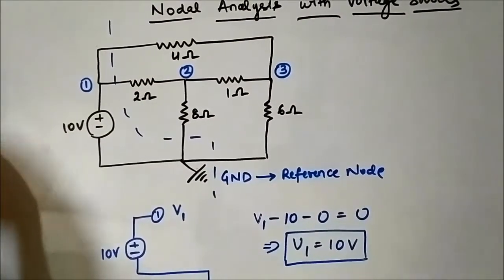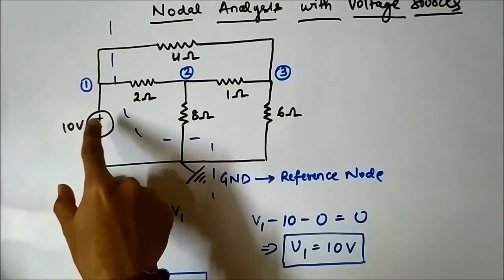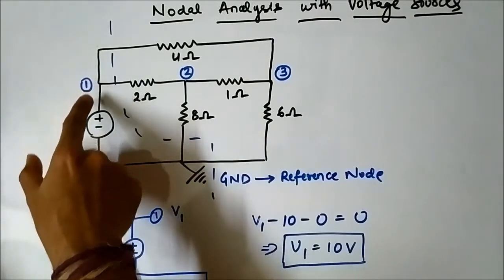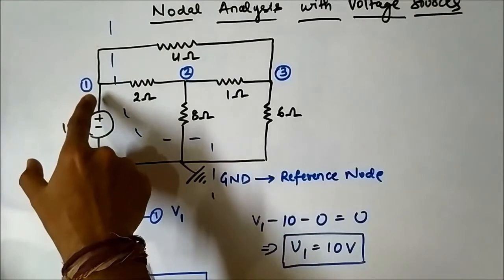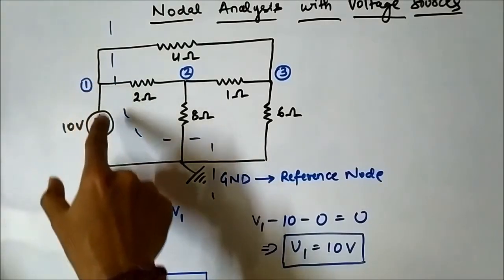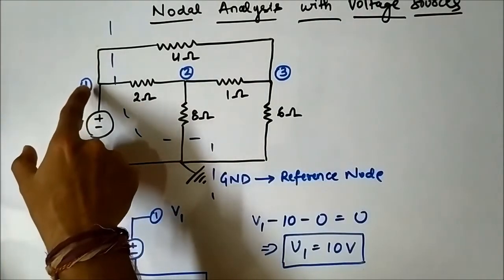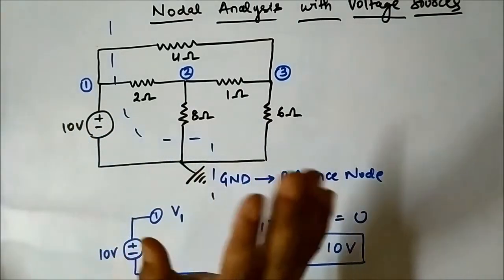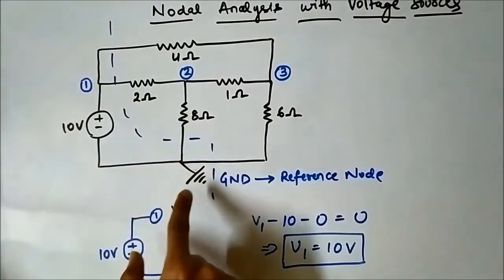The conclusion we draw from this analysis is that when you come across a circuit where a voltage source — be it independent or dependent — is connected between any particular node and ground or reference node, then the voltage at that particular node is equal to that specific voltage source. So here, between node one and ground, 10 volts is connected, so the voltage at node one is simply 10 volts.